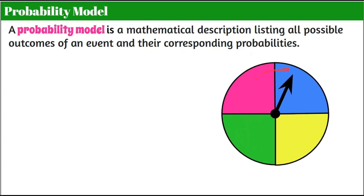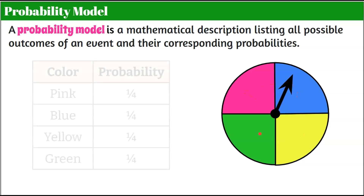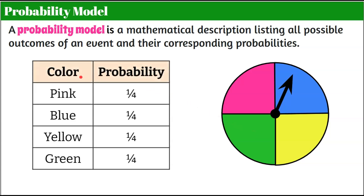We have a spinner here with four equal parts, so it's a fair spinner, meaning you have an equally likely chance of landing on any of the four colors when you spin. In theory, our theoretical probability is that we're going to land on pink one-fourth of the time, blue one-fourth, yellow one-fourth, and green one-fourth. So in a perfect world, if I spun it four times, I would land on each color once.